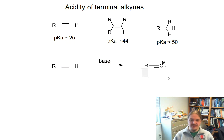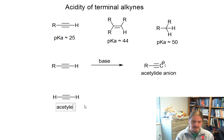These conjugate bases of alkynes are called acetylide anions. They're named as a generic class of anions after the conjugate base of the simplest of alkynes, which is acetylene. And so the conjugate base of acetylene is actually the ion named acetylide.